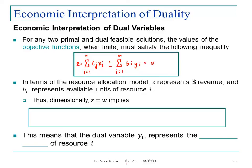The dual objective function is basically the upper bound for the objective function of the primal. The objective function of the primal can never be greater than the objective function of the dual. In terms of the resource allocation model, z represents revenue and bi represents available units of resource i.